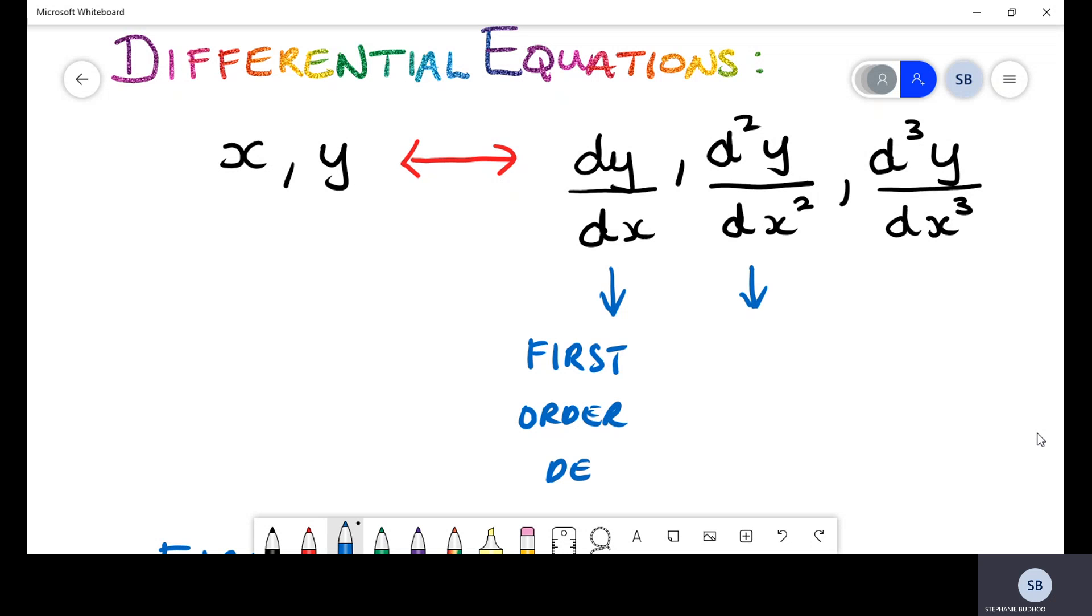Similarly, if your derivative is of a second power d²y/dx², then it's called a second order differential equation. If you had a derivative of the power of three, it would be third order and so on, but for your units we will only be considering these first two types.